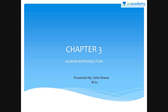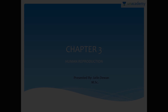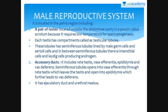Hello everyone, my name is Jatin Dewan and I shall start with human reproduction. There are two essential parts of human reproduction: one is the male reproductive system and the other one is the female reproductive system. We shall start with the male reproductive system.